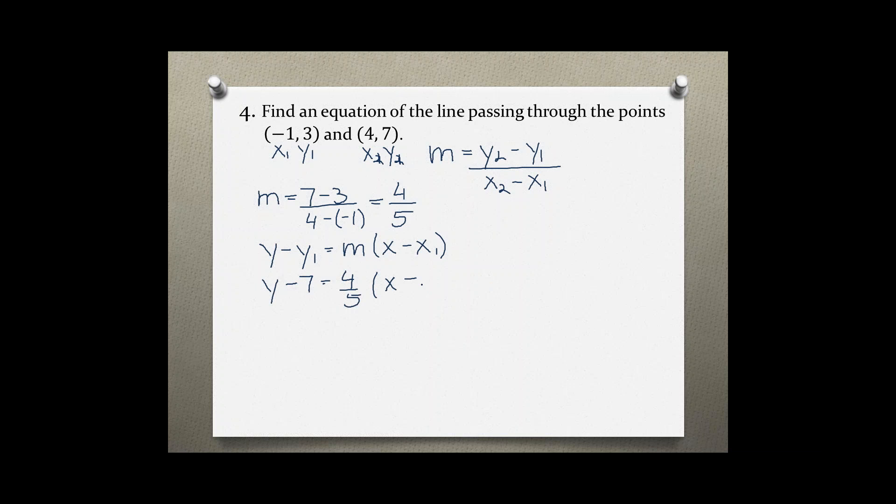y minus 4. Now solving for y, let's distribute first. y minus 7 equals 4 over 5x minus 16 over 5, adding 7 to both sides.